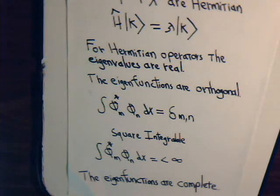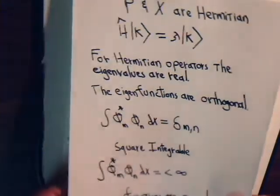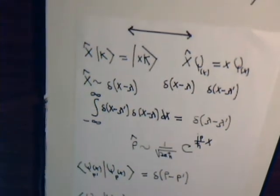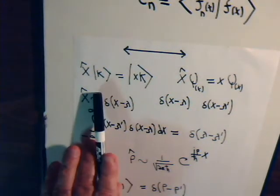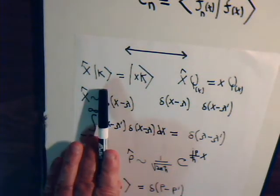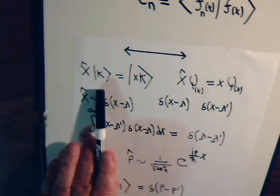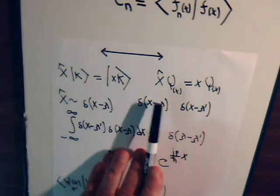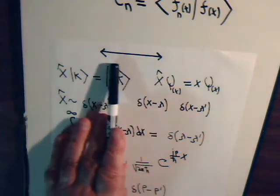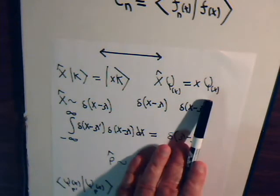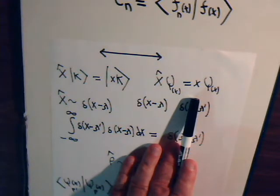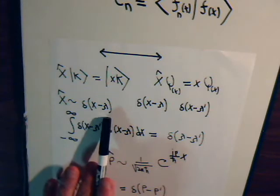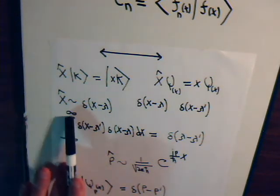When we discussed the position and momentum operators, we had some problems. For the position operator, if the position operator operates on a ket vector that is an eigenfunction, it is simply the coordinate x times that ket vector. Or, with the wave function of the particle on the x-axis, it would be that wave function times the coordinate. As discussed in that specific video, that didn't make much sense, and it turns out that the only kind of eigenfunction associated with this is the Dirac delta function.